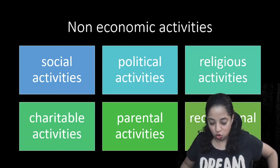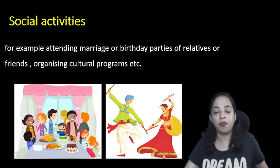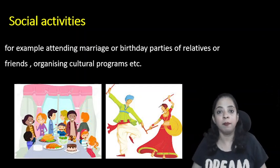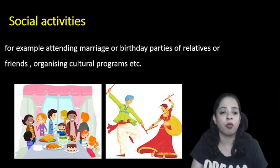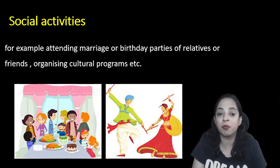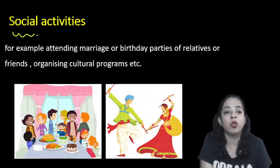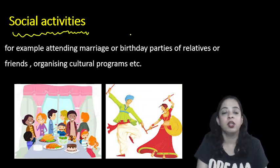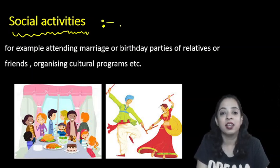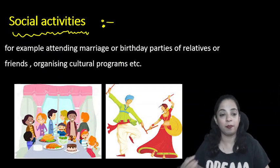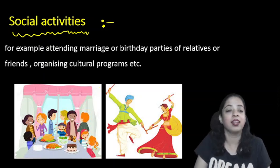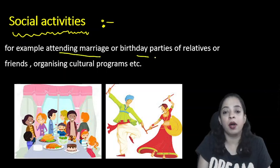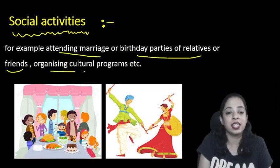The first is social activity. For example, attending marriages or birthday parties of relatives or friends, or organizing a cultural program. Human beings are social animals, so all activities done to remain in their social circle — to satisfy the want of being a social animal — are called social activities.